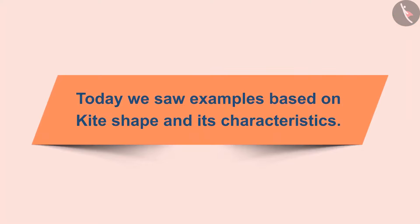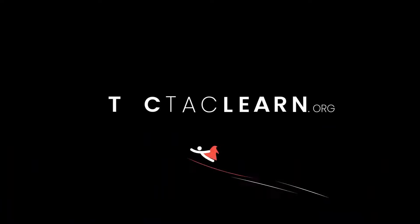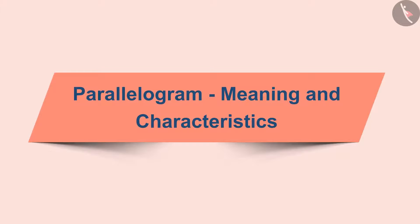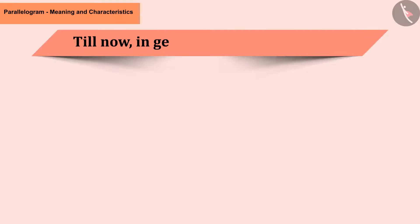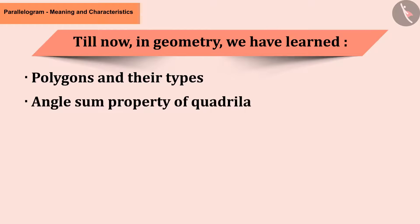Today we understood the characteristics of kites. Till now in geometry we have learnt about polygons and their types, angle sum properties of quadrilateral, trapezium and kite.